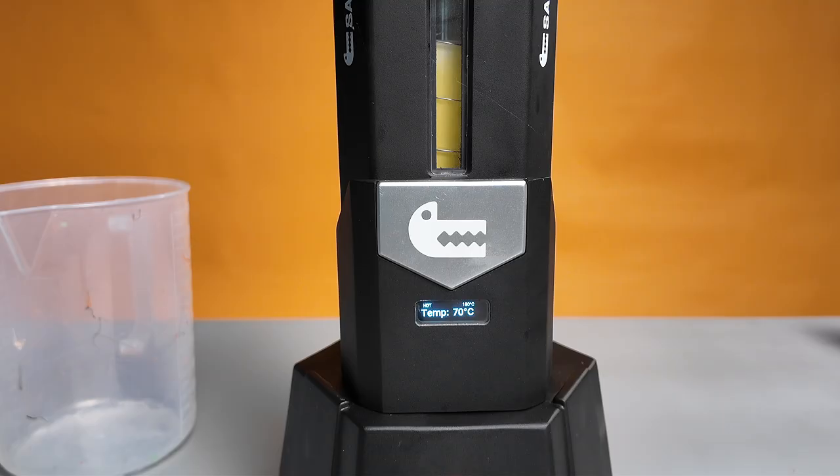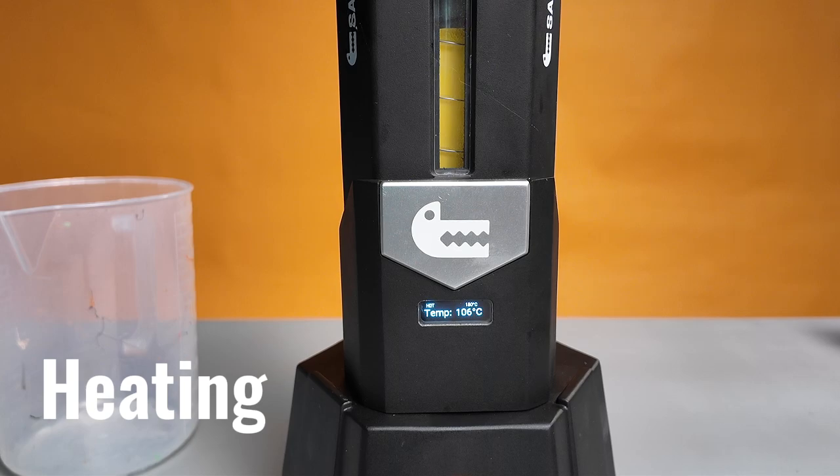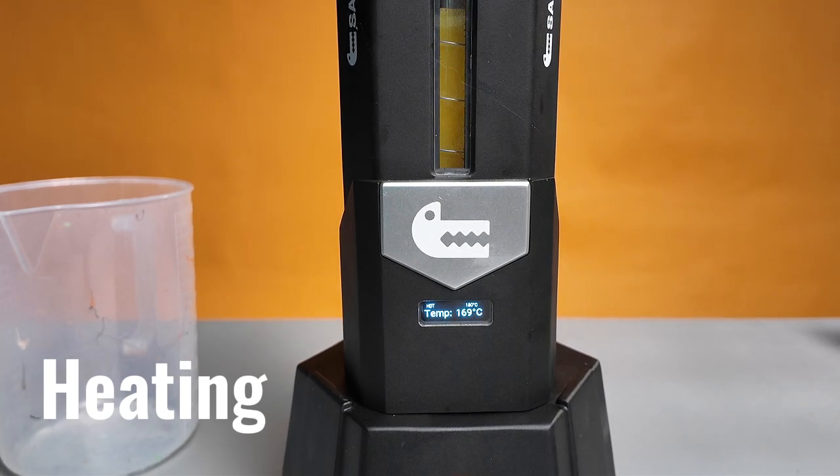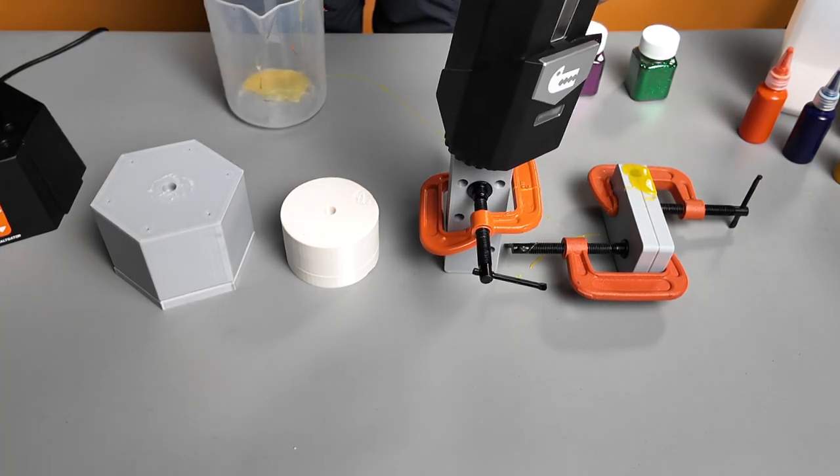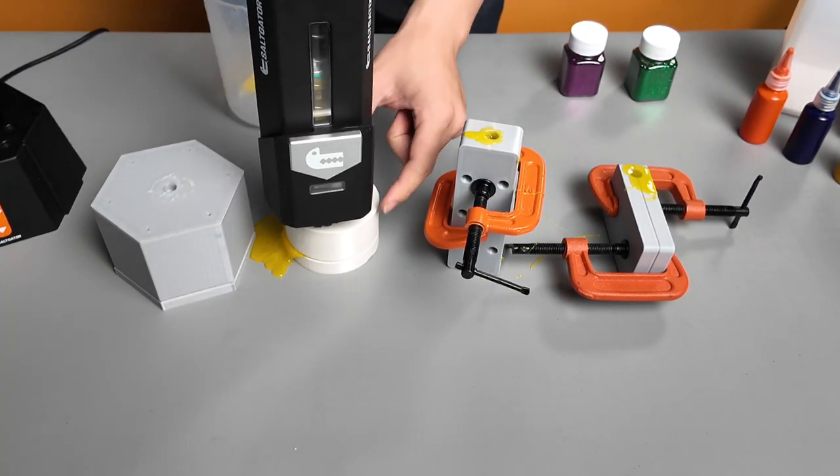We'll start by heating the raw material with SaltGator to around 170 degrees Celsius for plasticizing. Add any pigments you like, then inject the material into three different molds to showcase different product characteristics.